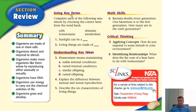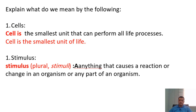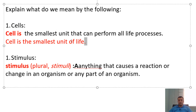Now let us solve our section review — there are eight questions. Question one asks us to complete sentences by choosing the correct term. Question two asks: what is a cell? A cell is the smallest unit that can perform all life processes, or in shorter form, the smallest unit of life — either answer is accepted.